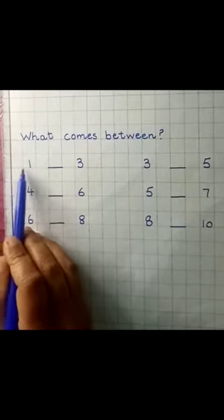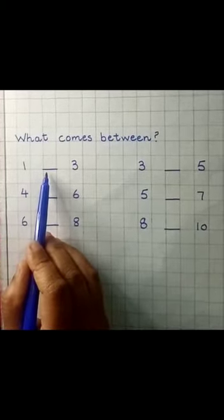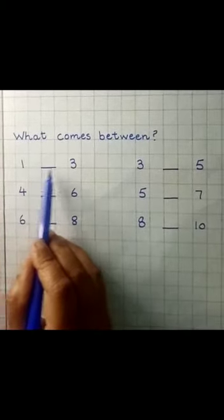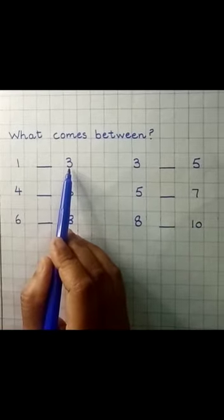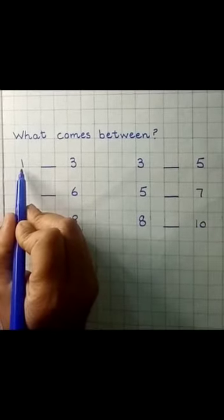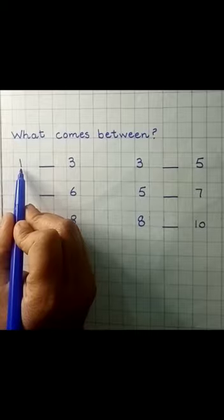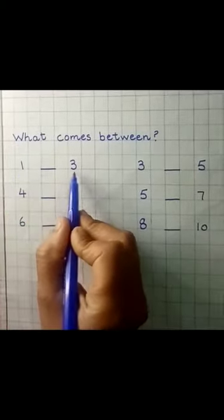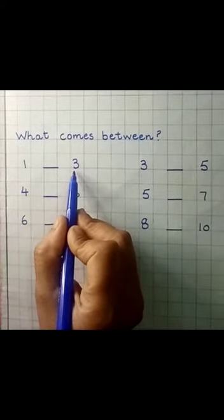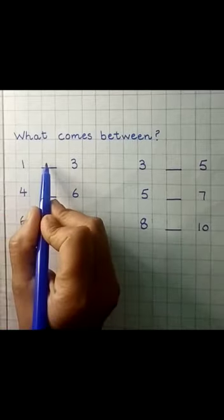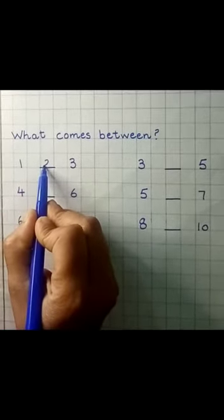Leave one block, then write one, then draw a blank here, then leave one block and write three. So here the first number is one. Which number comes between one and three? You have to write two over here.